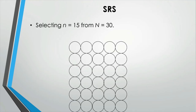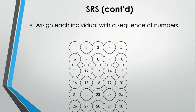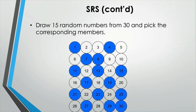Here is a cartoon illustration of how simple random sampling is done. We have a group of 30 — that is our population size — and we want to select a random sample of 15. Each individual has an equal chance of being selected. Before selecting the sample, we assign whole numbers in sequence to each member, then draw 15 random numbers from 30 and pick the corresponding members to form the random sample.